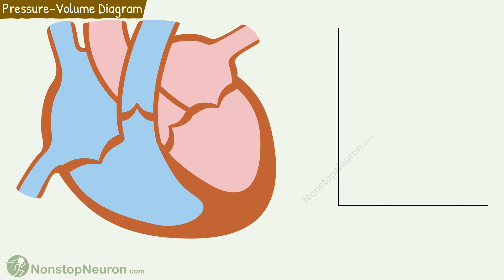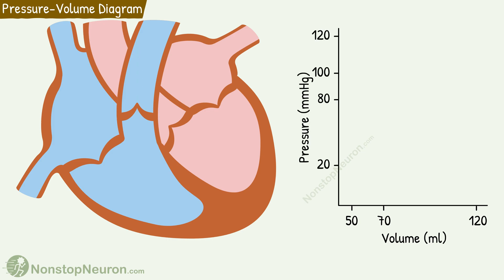Now let's draw a graph of pressure against volume. Here we have volume on the x-axis and pressure on the y-axis. The values shown here are for the left ventricle, but remember that a similar shape applies to the right ventricle also.